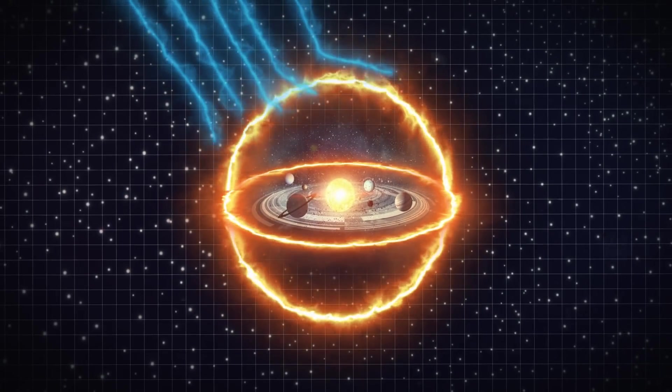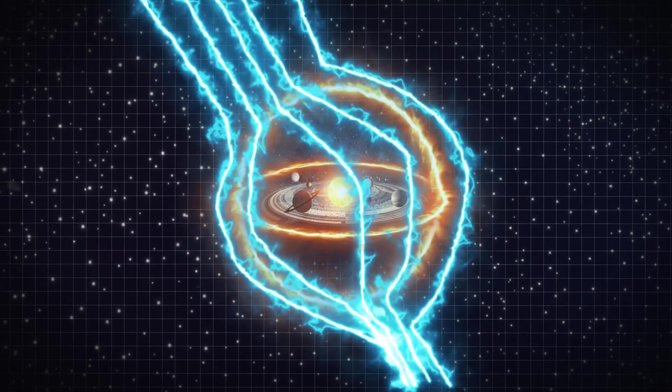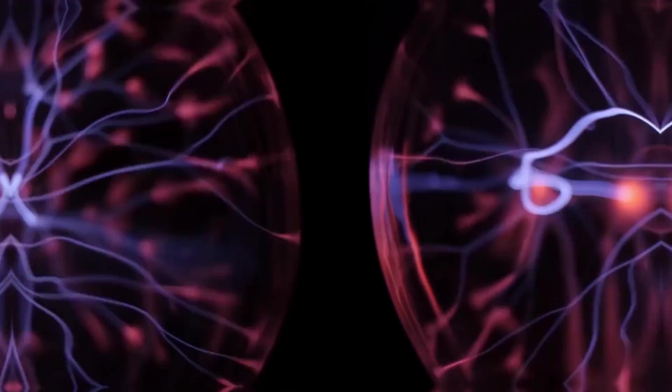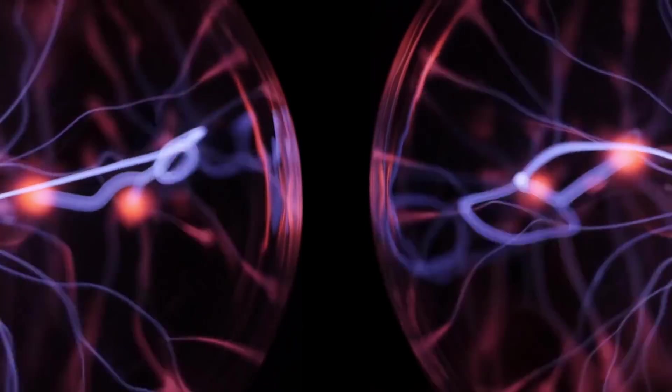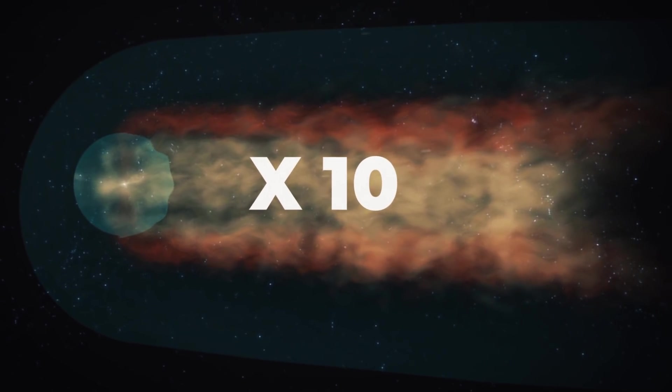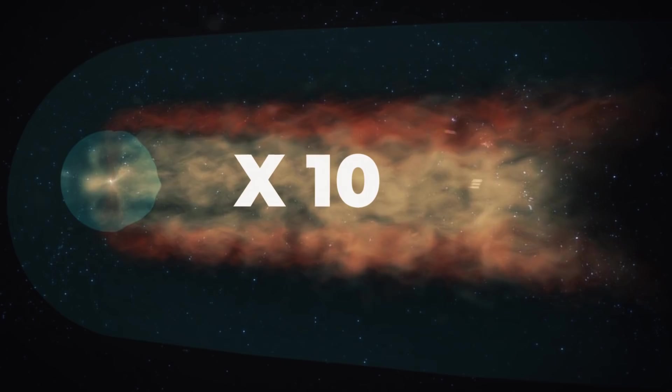For example, scientists discovered that the interstellar magnetic field is two to three times greater than previously assumed, implying that interstellar particles exert up to ten times more pressure on our heliosphere than previously anticipated.